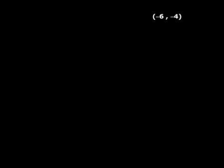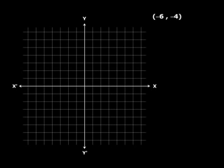Let me give you a point: minus 6 comma minus 4. Now if I ask you to plot this point on a Cartesian plane, can you do it? Let me help you. The first step is to draw the axes — x-axis and y-axis — so we draw two perpendicular lines, x-dash and y-dash, on a graph paper. Now you see this point where they intersect? Well, that is O, the origin. Now we are ready.